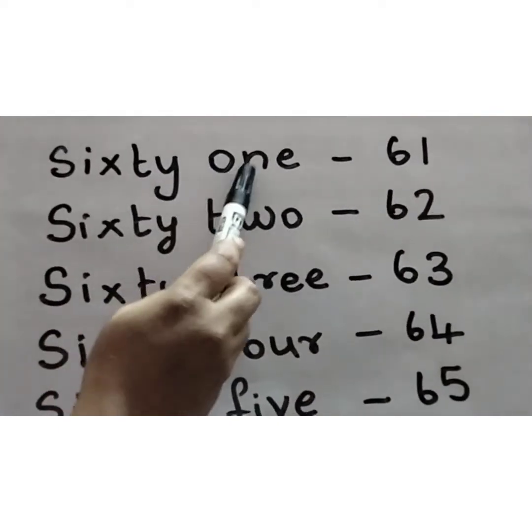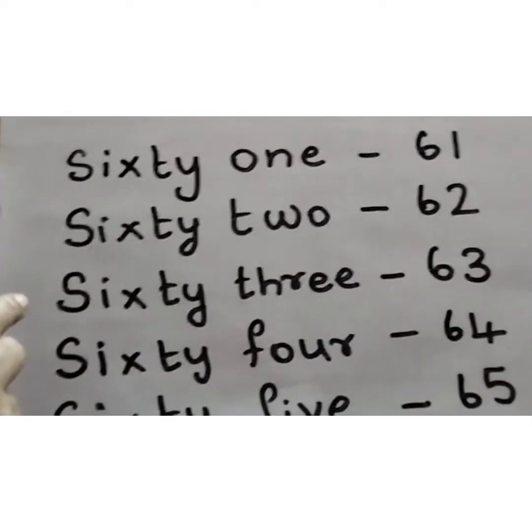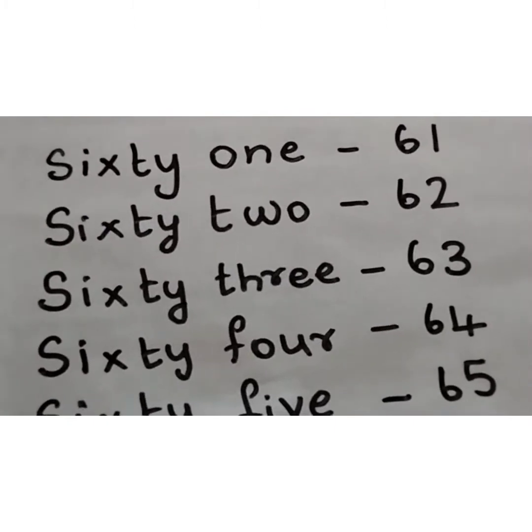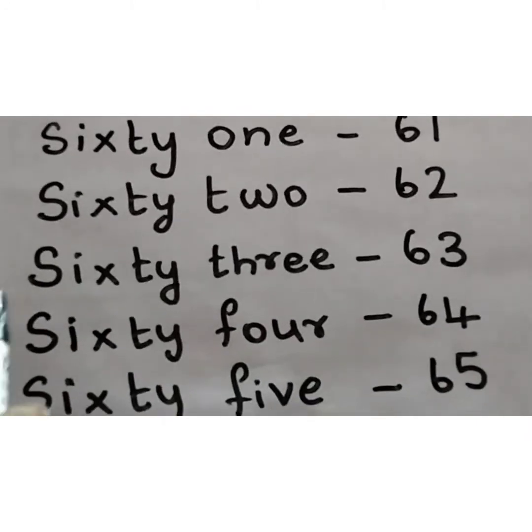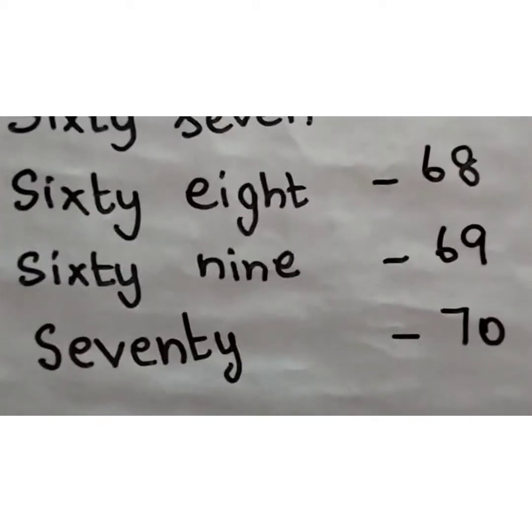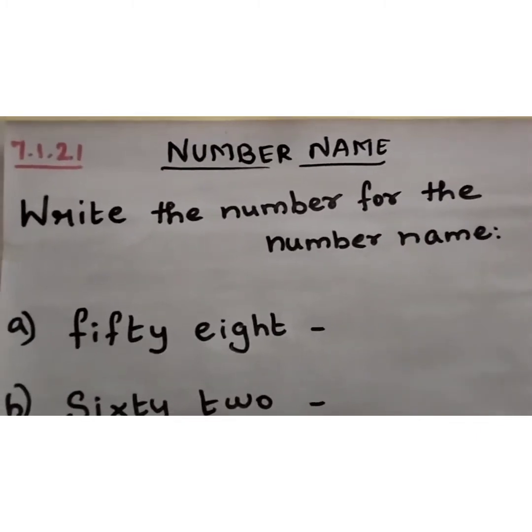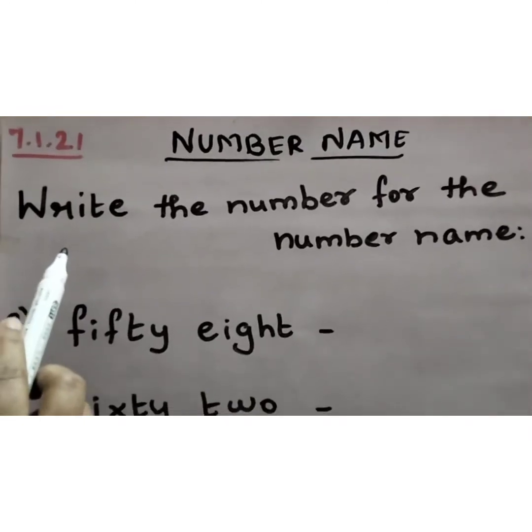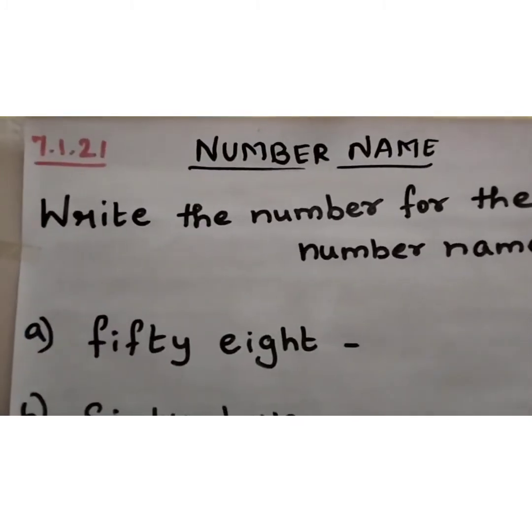So we wrote from 61 to 70 here. For this one day I told you, if you are thorough with the basics 1 to 20 and number name from 10 to 100, it will be easy for you to write from, to form the number name easily. Okay children. So 61 to 70 we wrote. Next. So children now we learnt number name from 51 to 70. Isn't it? Now we will see one small activity that is exercise children.